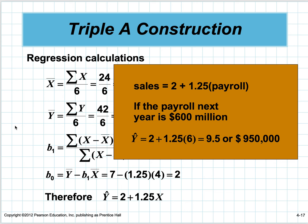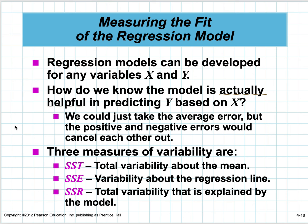Regression models can be made for any variables x and y. How do we know the model is actually helpful in predicting y based on x? We can compute any two things together, but usually you have to have some suspicion that the two things are related.